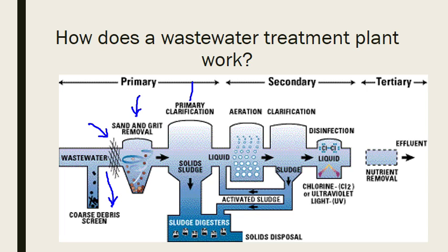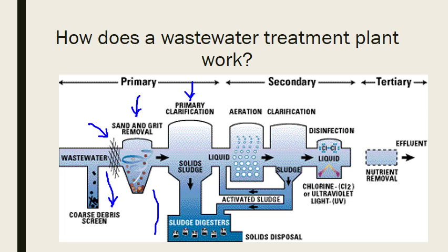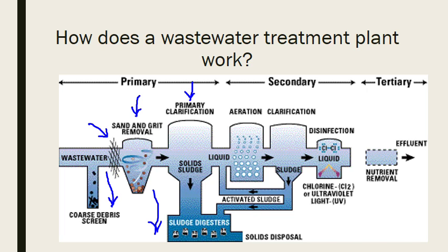Then the water ends up in the primary clarification tank, where it is simply allowed to settle and any solids fall down into the sludge digester. Primary wastewater treatment is a mechanical process — we are mechanically removing large materials and mechanically agitating the water to get things to settle out.